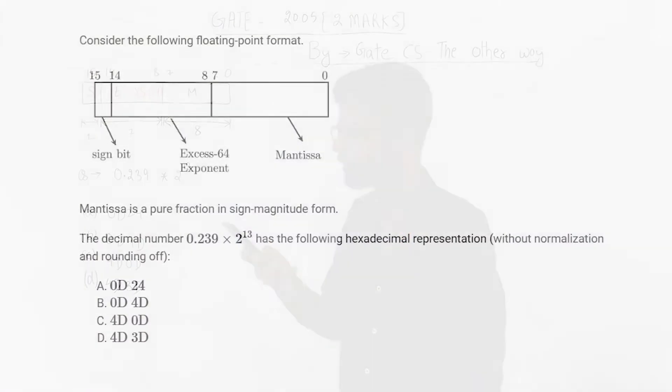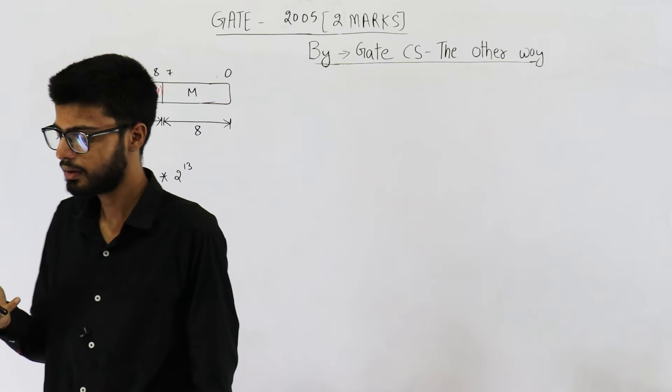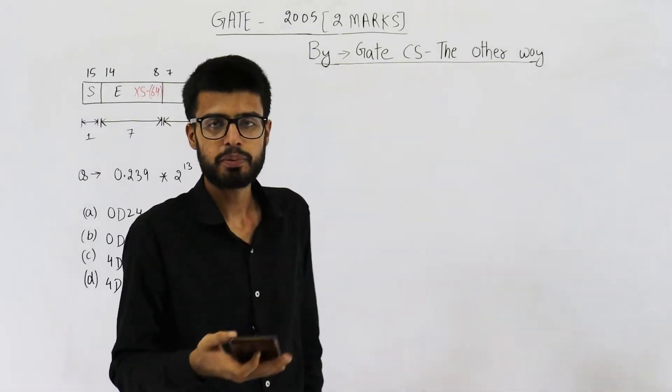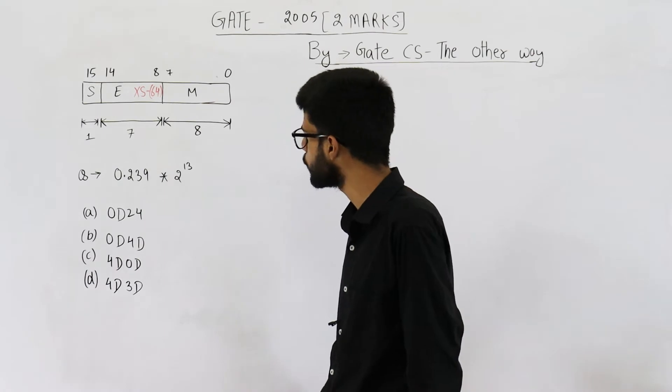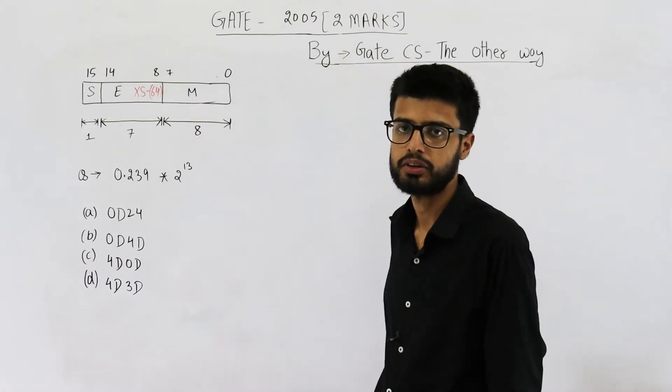It says, consider the following floating point format. You can see first bit is the sign bit. Then you have exponent bits and exponent is saved in XS64. Then there are mantissa bits. They are saying mantissa is a pure fraction in sign magnitude form. The decimal number 0.239 × 2^13 has the following hexadecimal representation without normalization and rounding off. So we need to represent 0.239 × 2^13 in this representation.